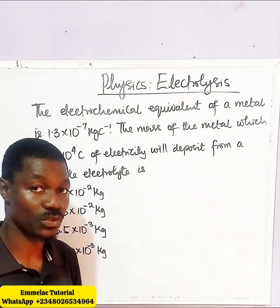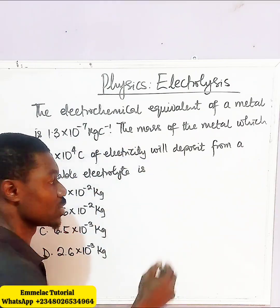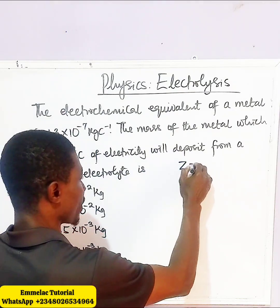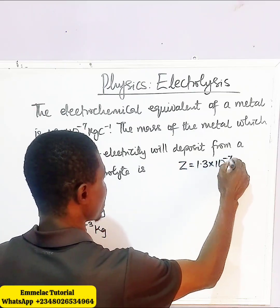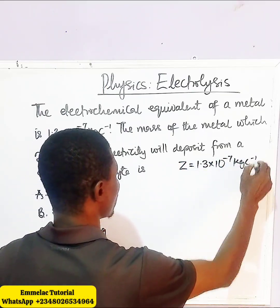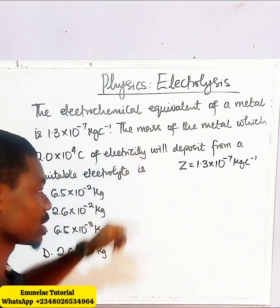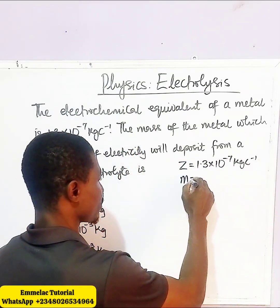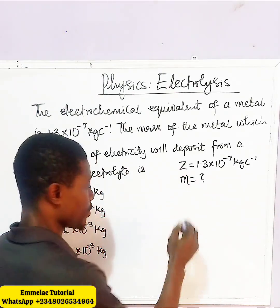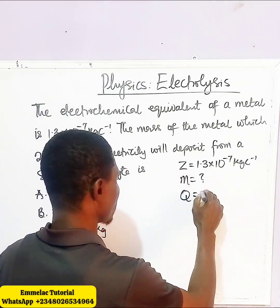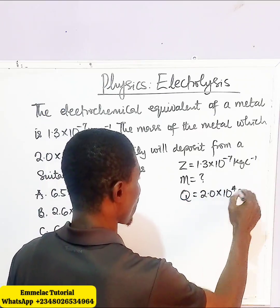First of all, we write out the parameters. We are given the electrochemical equivalent denoted by Z, which is 1.3 times 10 to the power minus 7 kg per coulomb. We are told to find the mass, so the mass is unknown. The quantity of electricity is given as Q equals 2.0 times 10 to the power of 4 coulombs.